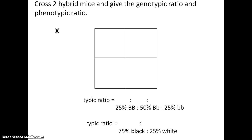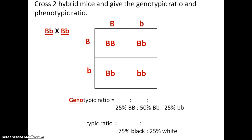Here we cross two hybrid mice and find the genotypic and phenotypic ratios. Both mice are heterozygous (big B, little b), so dad can contribute either big B or little b, and mom is the same. Combining them like a multiplication table, the genotypic ratio is 1 homozygous dominant : 2 heterozygous : 1 homozygous recessive. The phenotypic ratio is 3 black to 1 white, or 75% black and 25% white.